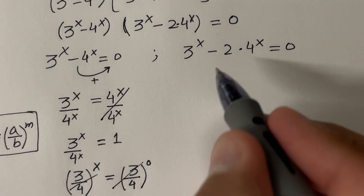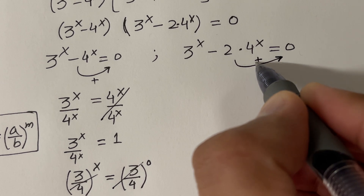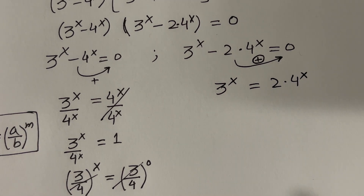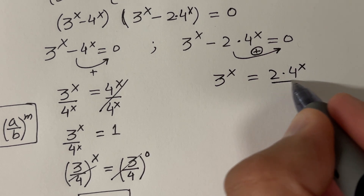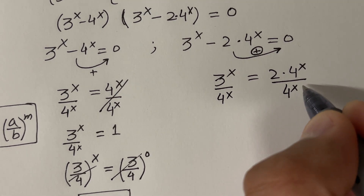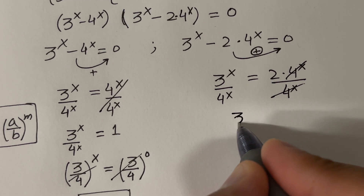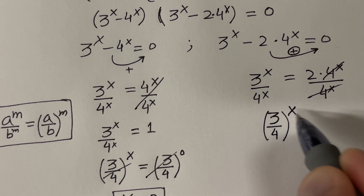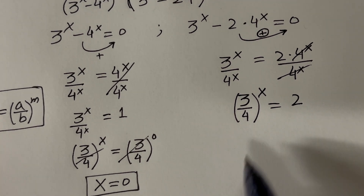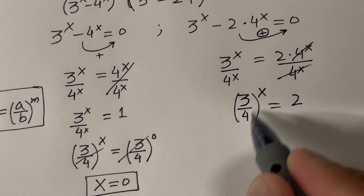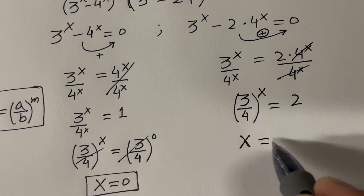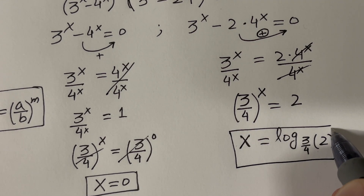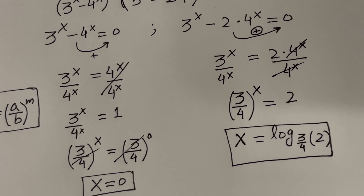Let's solve the second equation: 3^x minus 2 times 4^x equals 0. Moving the second term to the other side gives 3^x equal to 2 times 4^x. Dividing both sides by 4^x and using the same property, we get (3/4)^x equal to 2. Applying logarithm base 3/4 to both sides gives x equals log base (3/4) of 2. This is the second solution of the given equation.